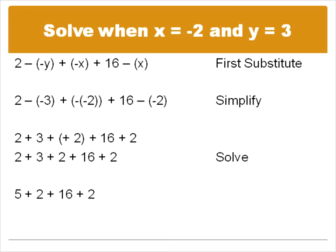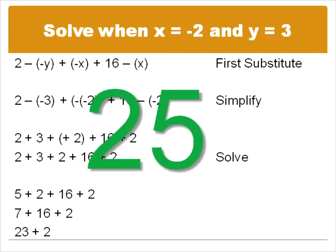And we're just going to go ahead and solve that. Again, moving from left to right doing addition and subtraction in the order that they appear. We'll do two plus three is five. Then five plus two is seven. Seven plus sixteen is twenty-three. And twenty-three plus two is twenty-five. So that is an example of a question that incorporates substitution and addition and subtraction of positive and negative numbers.